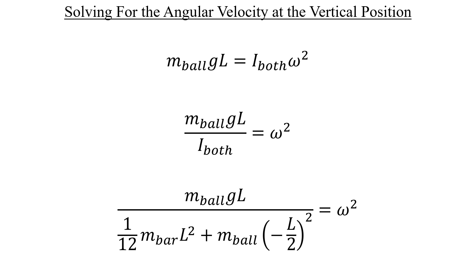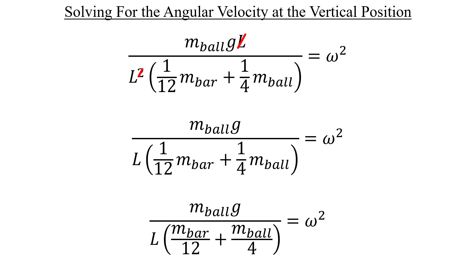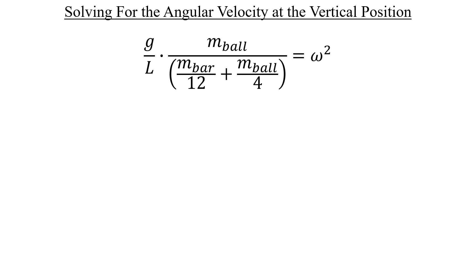I'll do the exact same approach and start by squaring the negative L over 2 term in the denominator and then pull L squared out front. And just like before, we can divide out a single factor of L upstairs and downstairs. Next, I'll make the expression compact again by moving the mass terms in the denominator. We'll divide the denominator into the numerator of the fraction coefficients that they're touching. Following that, we'll factor out g over L and then multiply the mass of the ball divided by 4 by a special form of 1.